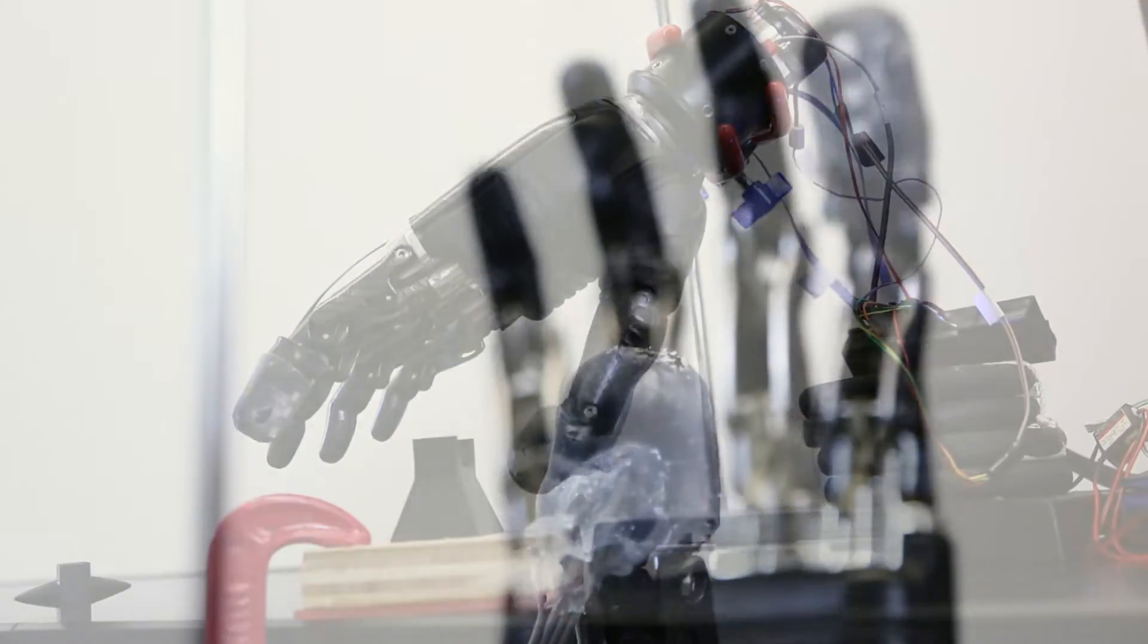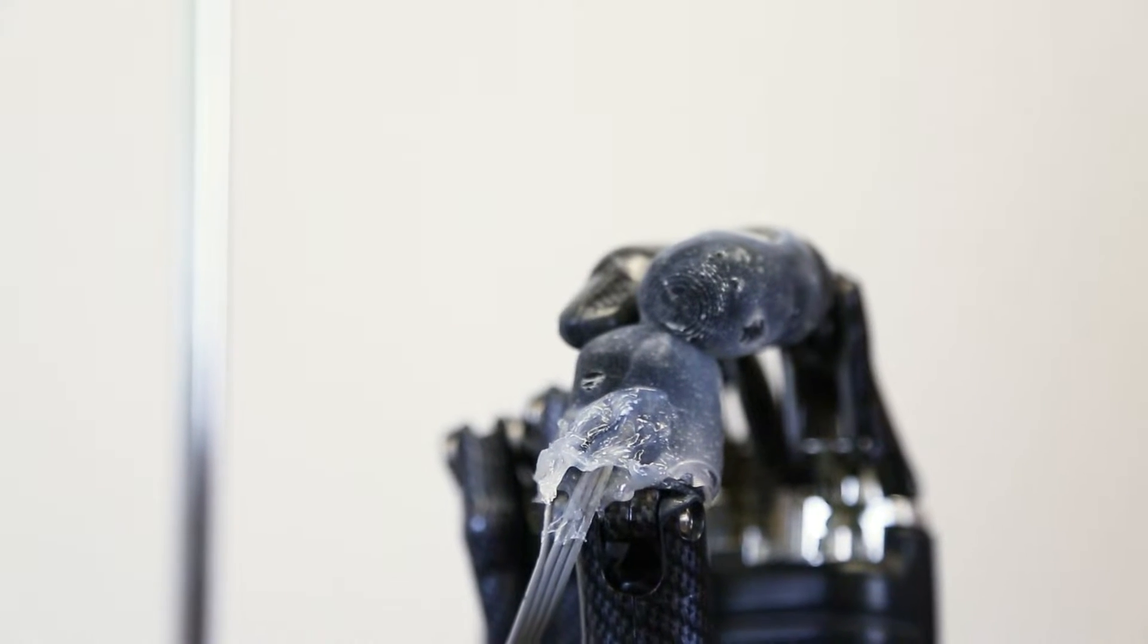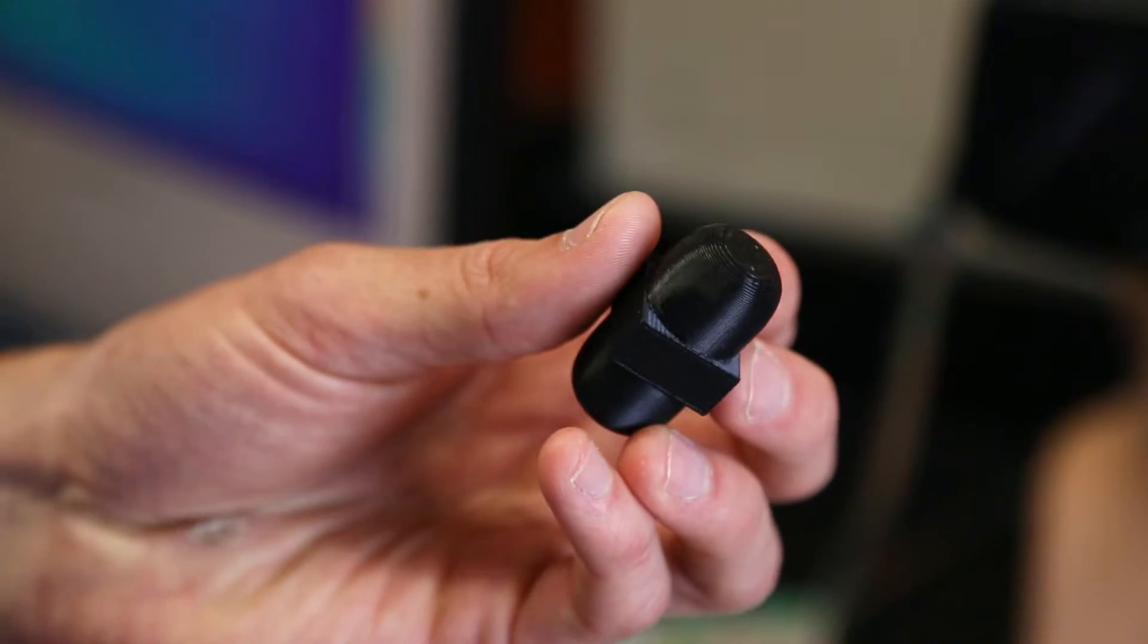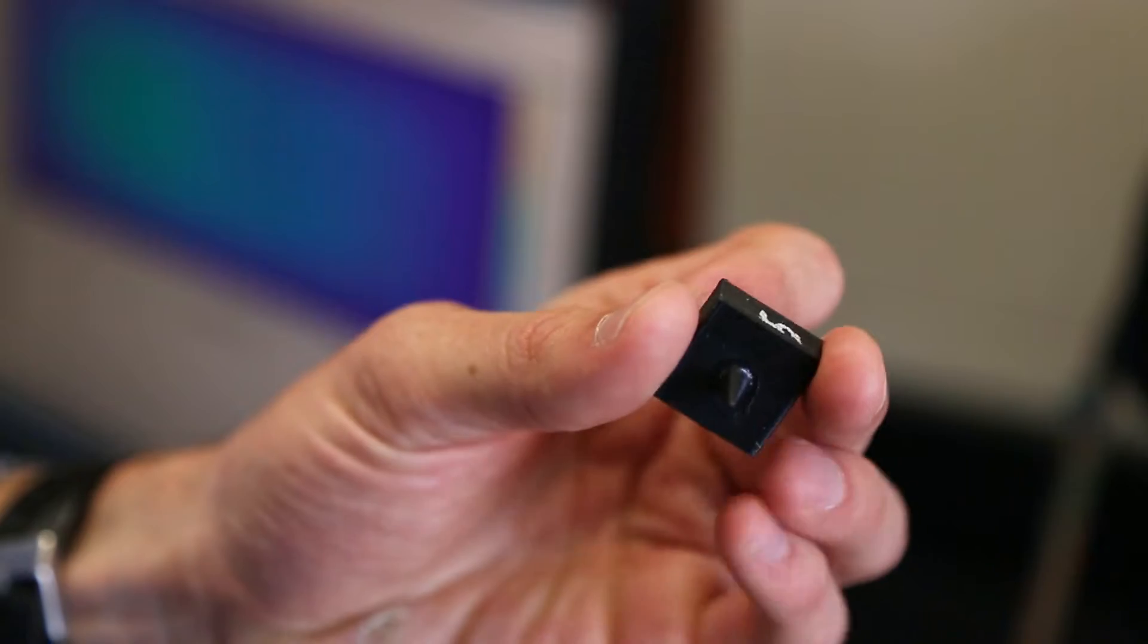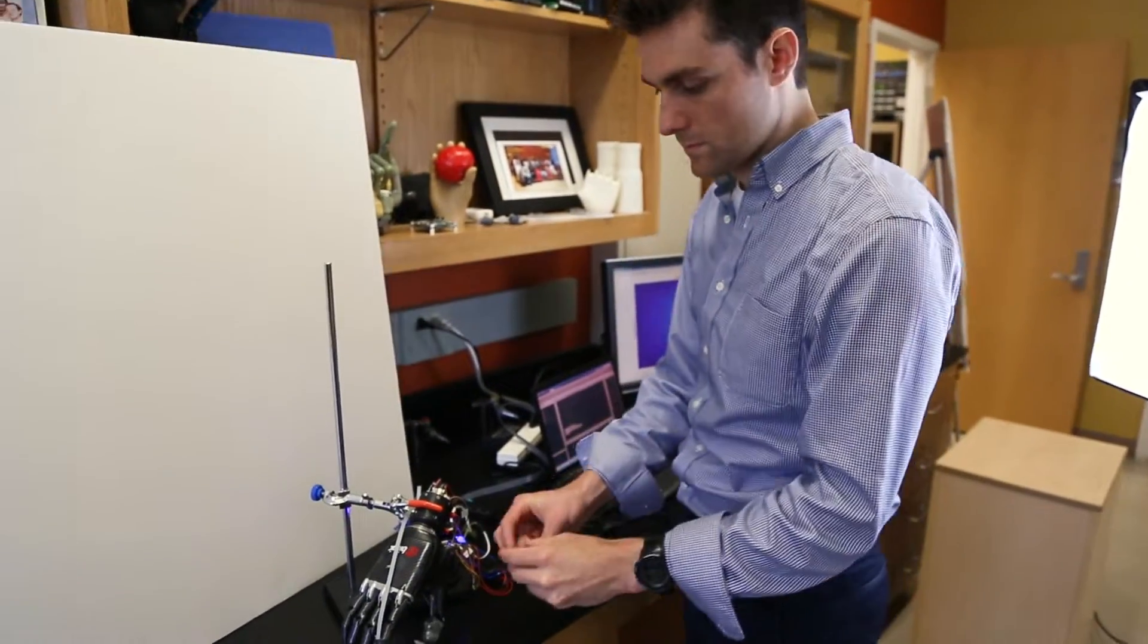We're calling the device we made an e-dermis, an electronic dermis, and what's particularly interesting is that we're able to detect an object's curvature. So we can differentiate between something that's nice and rounded versus something that's very sharp and pointy, and that's what lets us be able to differentiate between something that's painful or not.